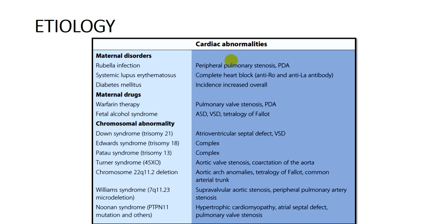Fetal alcohol syndrome can also cause tetralogy of Fallot. Chromosomal abnormalities are associated with high risk of congenital heart disease. For example, trisomy 21 — Down syndrome, the most common one — can cause AV canal, complete atrioventricular septal defect, or VSD. Edward syndrome, Patau syndrome, Turner syndrome, Williams syndrome, Noonan syndrome, DiGeorge syndrome — all of them can be associated with increased risk of congenital heart disease. The mode of inheritance in congenital heart disease is usually multifactorial: genetic predisposition plus exposure to maternal disease, drugs, or chromosomal abnormalities.